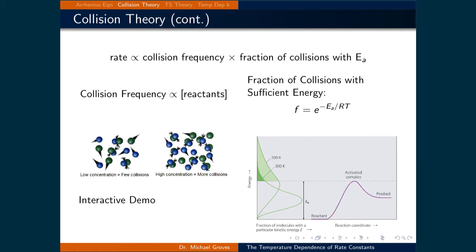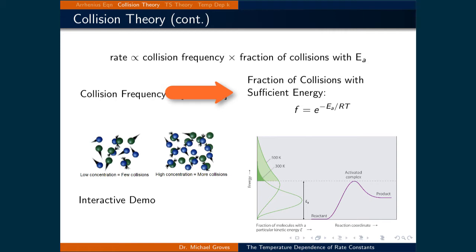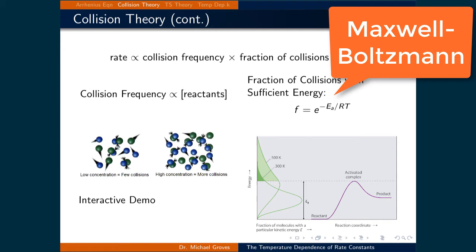Let's start collecting the terms necessary to quantify if a reaction will go to completion. The first thing we need to know is the number of collisions that occur. It is intuitive to relate the frequency of collisions to the concentration of the reactants — the greater the concentration of reactants, the more often reactants will collide. We can also quantify the fraction of these collisions with sufficient energy to overcome the activation energy, which is equal to e raised to the power of negative Ea over RT. This factor is Maxwell-Boltzmann in nature and is related to the partition function.